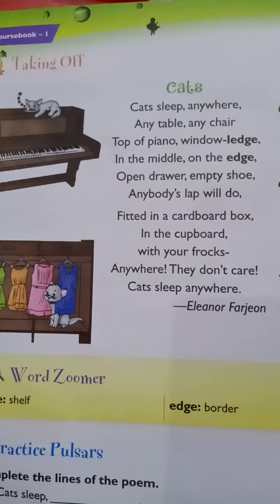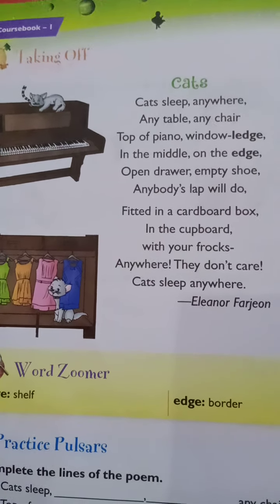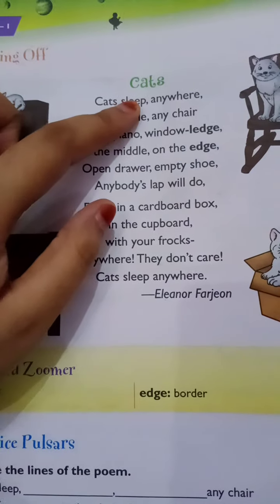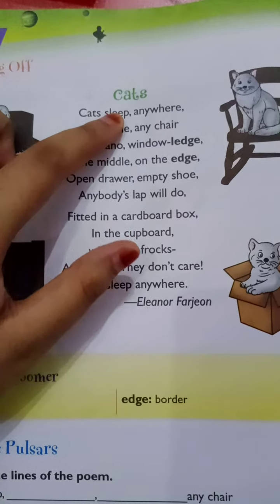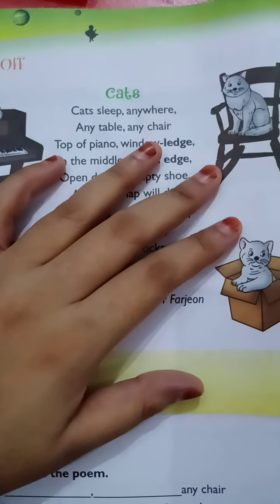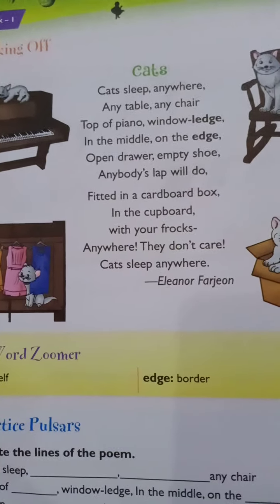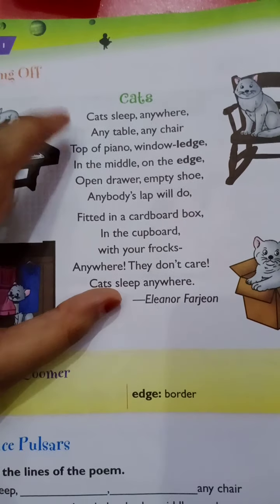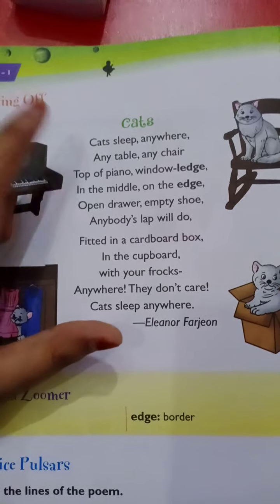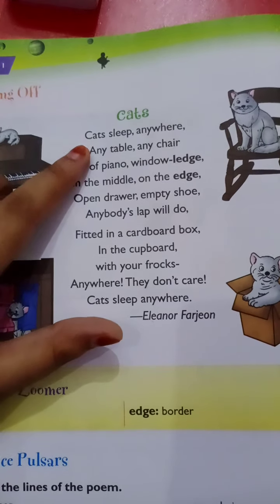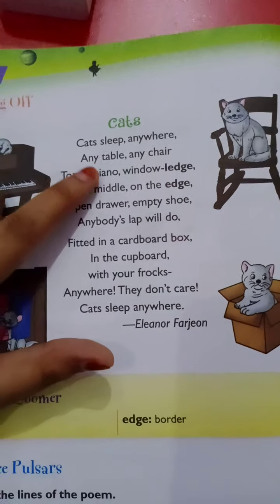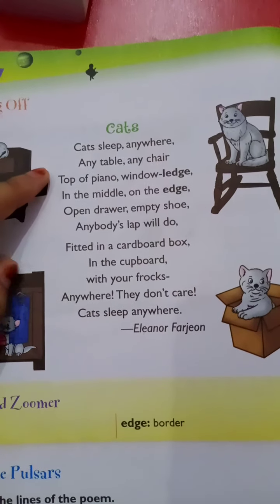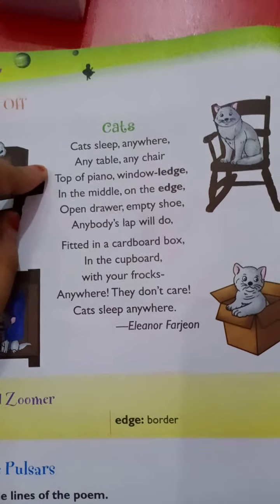Dear students, today I am going to start the third chapter of English First. The chapter name is 'Cats.' Have you seen cats? A cat is a pet animal. This is a poem, and in this small and sweet poem we will see how a cat sleeps and on which place a cat can sleep.